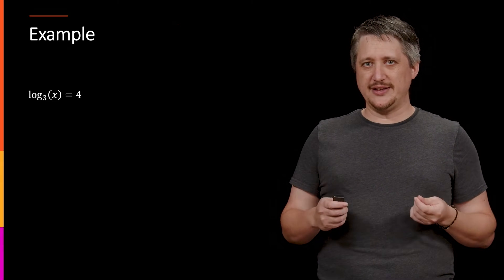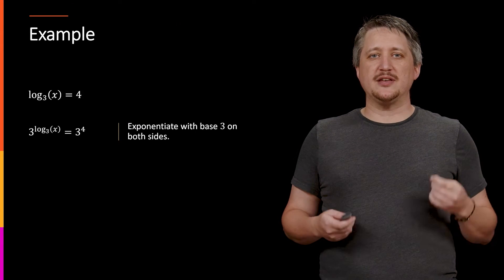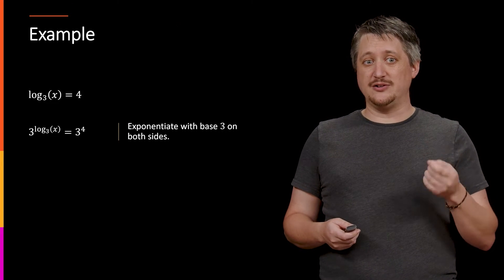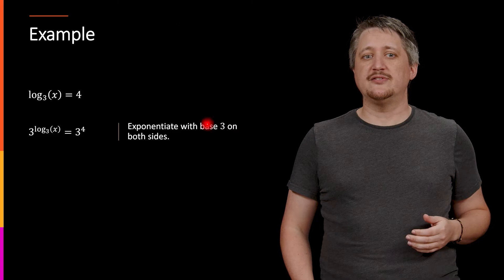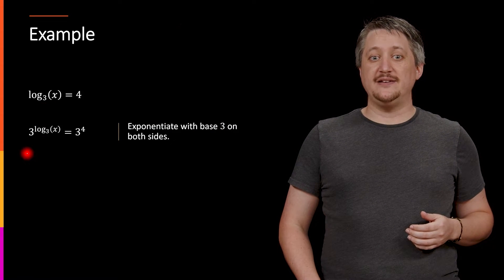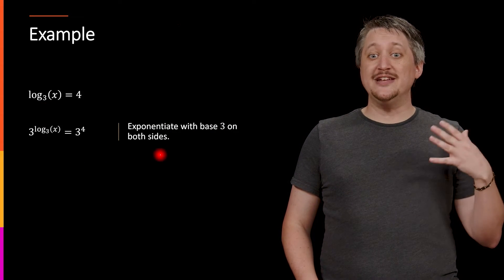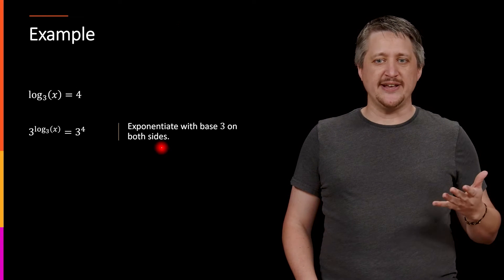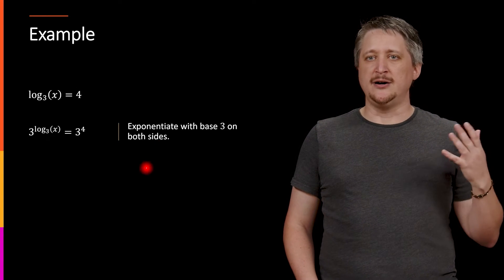Similarly, this can go in both directions. It's much less common to run into a log base 3 of x situation - usually we're undoing exponents. But sometimes we have stuff in a log we want to get rid of. The way we do that is we use the same base for the logs. This is log base 3, so we exponentiate with base 3 on both sides.